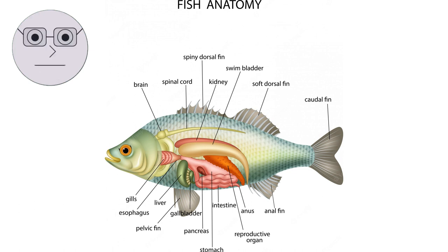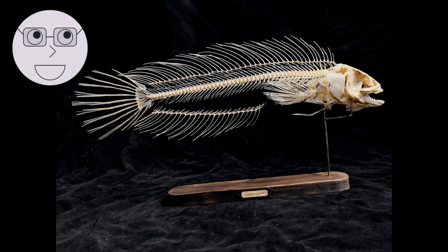From their skeletal structure to their digestive system, fish have a number of fascinating biological features. Fish have a bony or cartilaginous skeleton that provides support and protection. Their fins are supported by ray or spines, which are made of bone or cartilage. The swim bladder, a gas-filled sac, helps fish maintain buoyancy in the water.